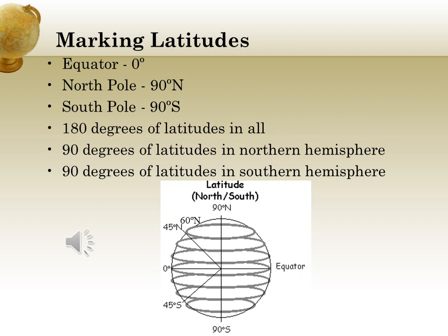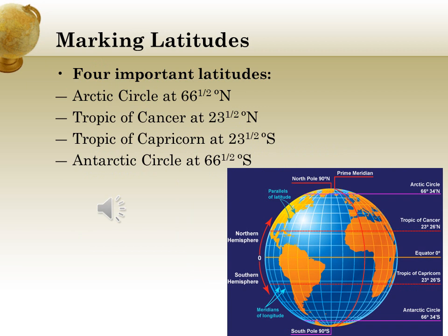Now let us learn how to mark latitudes. Please observe the picture given below. The equator is marked at 0 degrees. The north pole is marked at 90 degrees north and the south pole is marked at 90 degrees south. The latitude of a place tells you how far north or south a place is from the equator. For example, a place with a latitude of 45 degrees north is located in the northern hemisphere, midway between the equator and the north pole. A place at 60 degrees north is further north. As the degree increases, the latitude moves away from the equator. In total, there are 180 degrees of latitude — 90 in the northern hemisphere and 90 in the southern hemisphere.